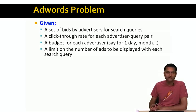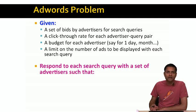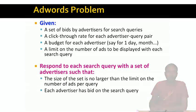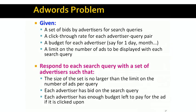This limit could be one, two, or three. We need to respond to each search query with a set of advertisers such that the size of the advertiser set is no larger than the limit on the number of ads per query. Each advertiser we show must have actually bid on the search query. And if the ad is shown and somebody clicks on it, the advertiser should have enough budget left to pay for the ad. So we don't want to show ads from advertisers who don't have budget to pay for the clicks.